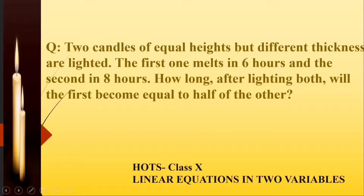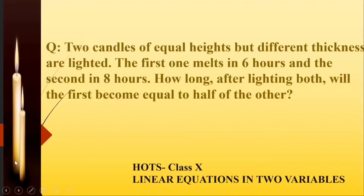Now understand the question. We have two candles of equal heights but of different thickness, so the melting time will be different. Obviously the thinner one will be melting faster than the one with more diameter and more thickness. So as both lit candles melt, the point will come when the thinner candle will be half of the length of the thicker candle. The question asks: how long will it take for that stage to arise?